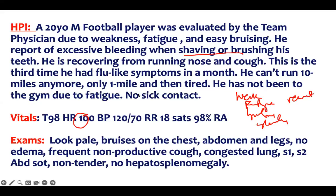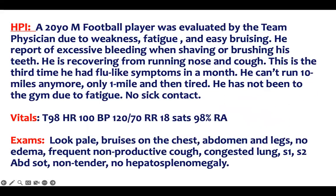He's tachycardic and weak. His body shows he's pale. He has bruises on the chest and abdomen, and he's having recurrent infection. Something should be telling you that we have a platelet problem, a WBC problem — that's the recurrent infection — and an RBC problem — that's the fatigue and pallor. After reading this question, you should be able to make a diagnosis.